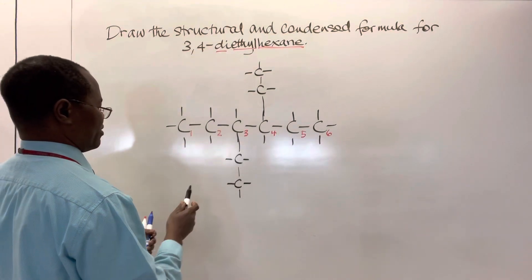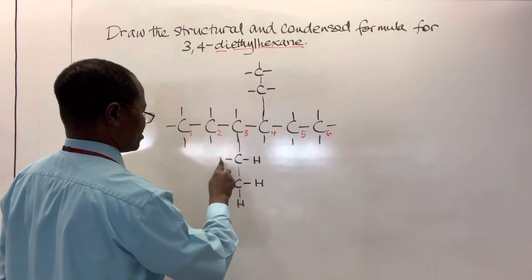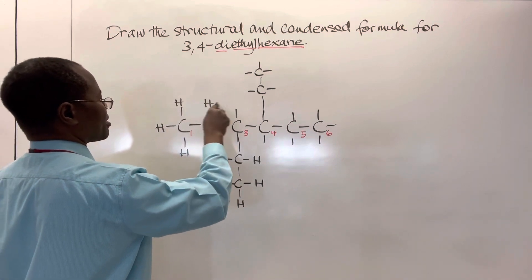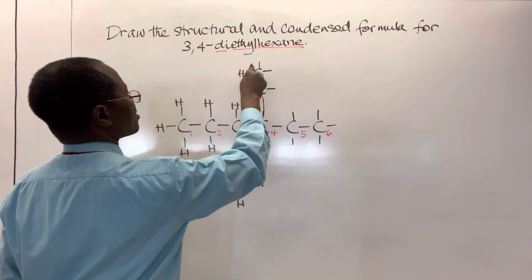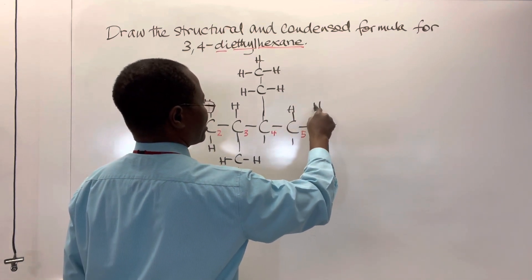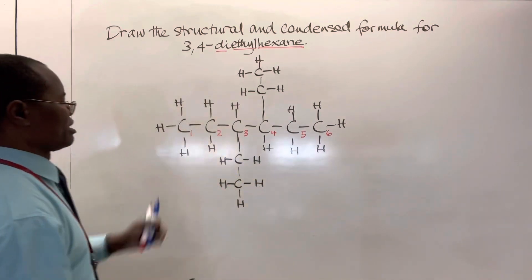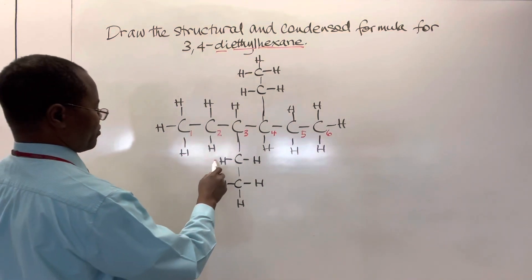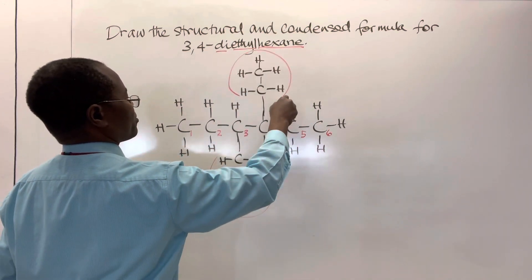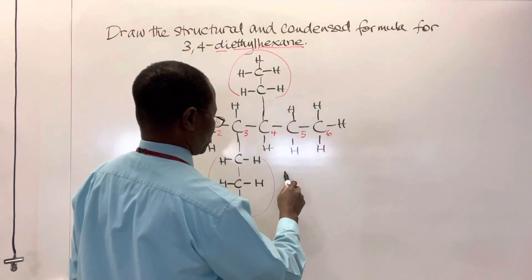Now we can fill in the hydrogen atoms connected to each of these carbon atoms. In some cases it's not necessary to put the hydrogens — anyone who understands organic chemistry knows what's supposed to be there. So we have this ethyl group at carbon number three and this ethyl group at carbon number four. That's the structural formula.